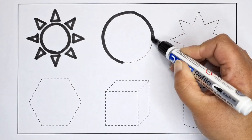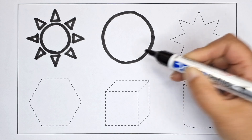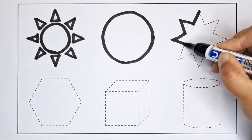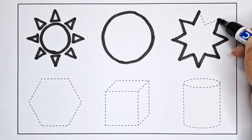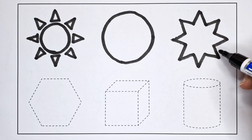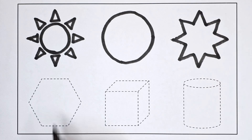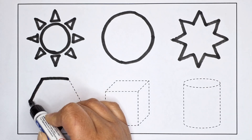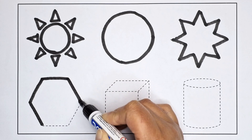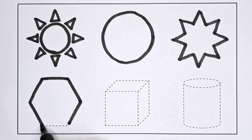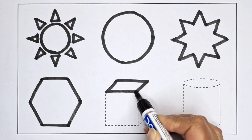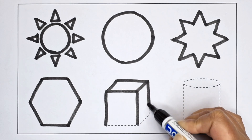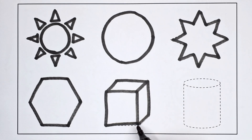Sun circle. Eight point star. Hexagon. Cube.